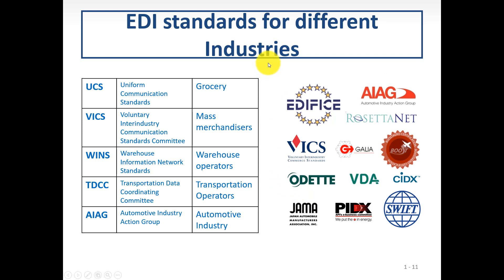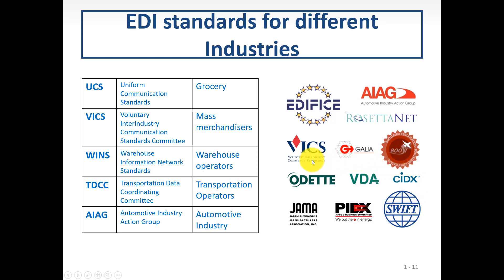Depending on the industry, different EDI standards apply. A common one is VICS — the Voluntary Inter-Industry Communication Standards committee — used for mass merchandisers. For transportation operators there is TDCC, and the auto industry has its own standards. These are well-established organizations: the Japan Automobile Manufacturers Association, SWIFT, and Transportation standards. A company may need to deal with multiple types of standards simultaneously.